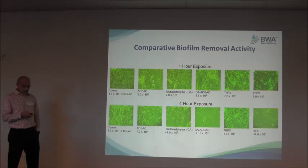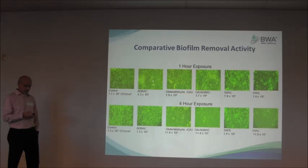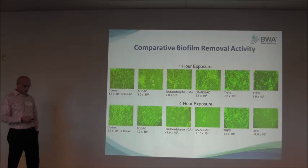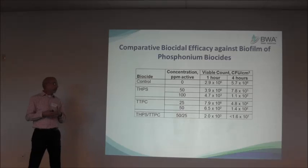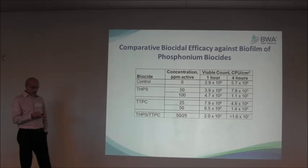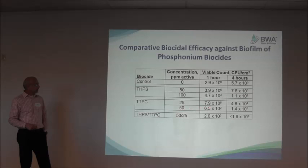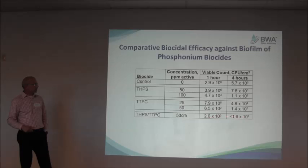What we did at this point is — knowing that THPS is a popular product in oil and gas applications — we saw that when you add a surfactant-type product to the mix, you get good biofilm removal. So we looked at a combination of THPS and TTPC to see if there would be any benefit combining those two products. THPS by itself at 100 ppm shows a full log reduction. TTPC at 50 ppm shows a full log reduction. Combining these two products at a two-to-one ratio, you can see improved performance compared to the individual products at much higher doses.